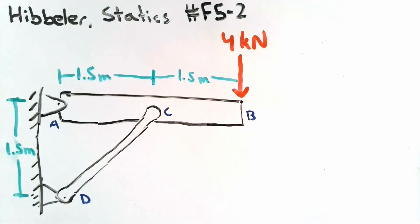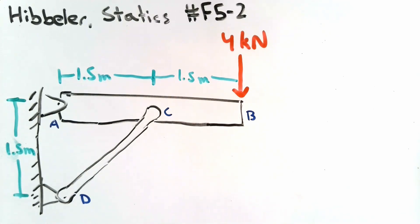This is problem F5-2 of Hibler's Statics textbook, 14th edition. In this problem, we are looking at the equilibrium of a rigid body. We're given a static system, that is a system in equilibrium, where you have a 4kN force acting on a rigid body at point B.